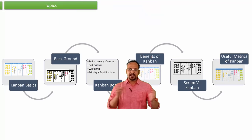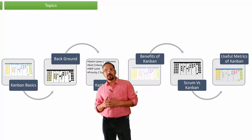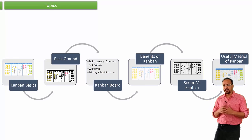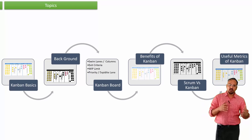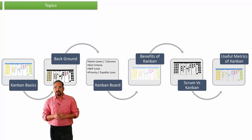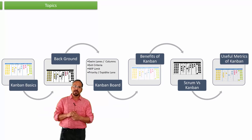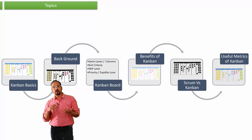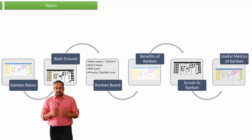Today we'll talk about a basic understanding of Kanban — what exactly the Kanban board is, its background and history, different areas of the Kanban board, exit criteria, WIP limits, and how we can make a Kanban board with different columns. We'll also cover the benefits of Kanban, the difference between Scrum and Kanban, useful metrics, and later we'll show a live Kanban board in different ALM tools like Rally, Jira, or TFS.